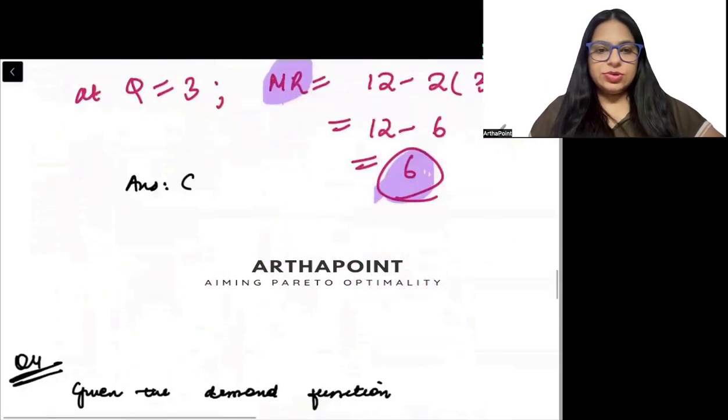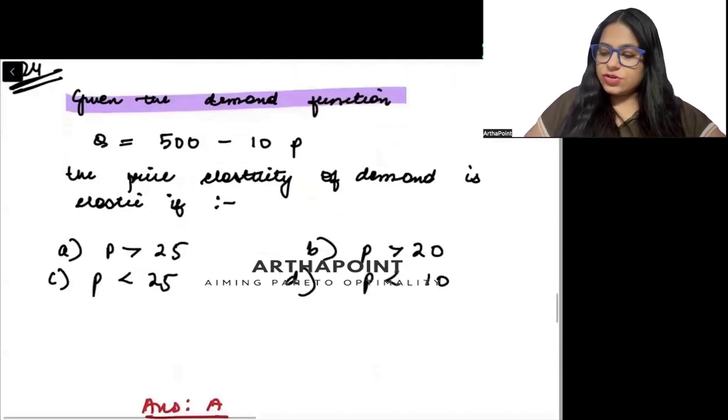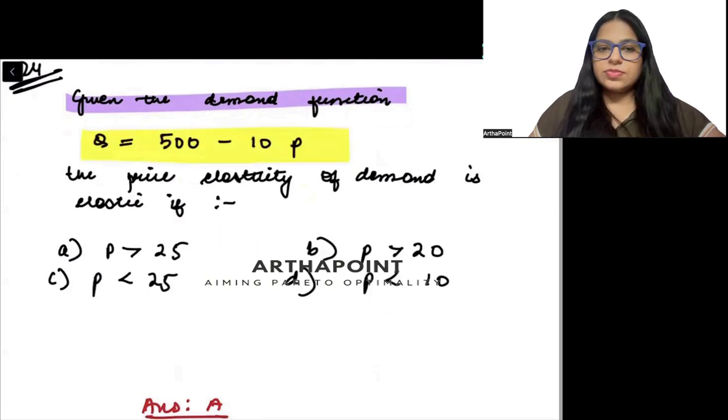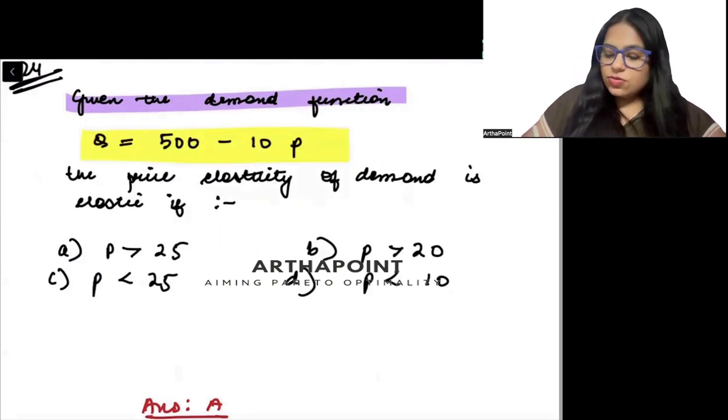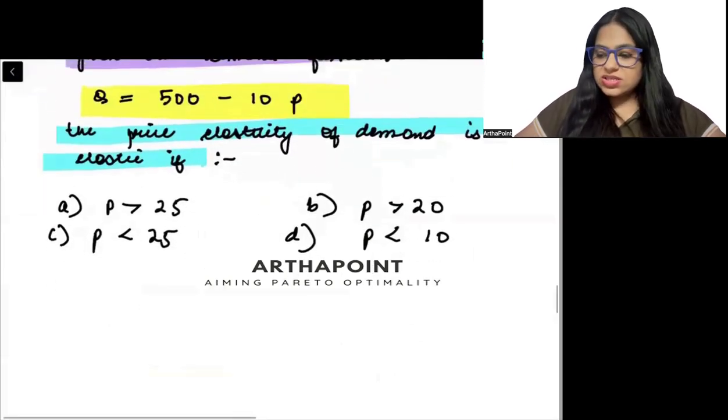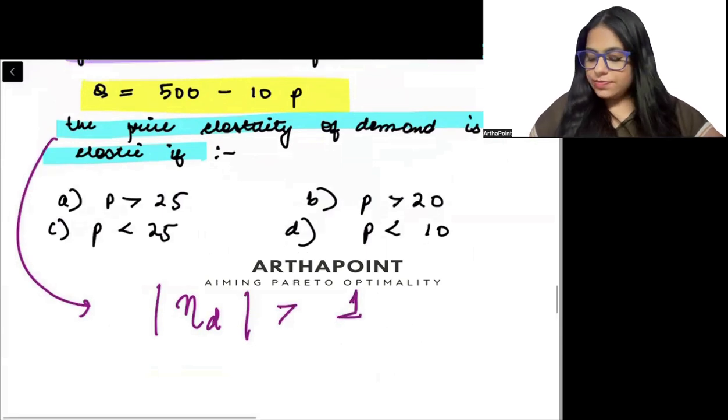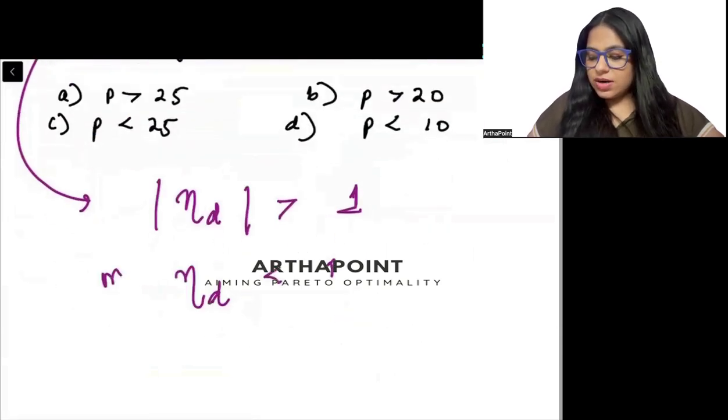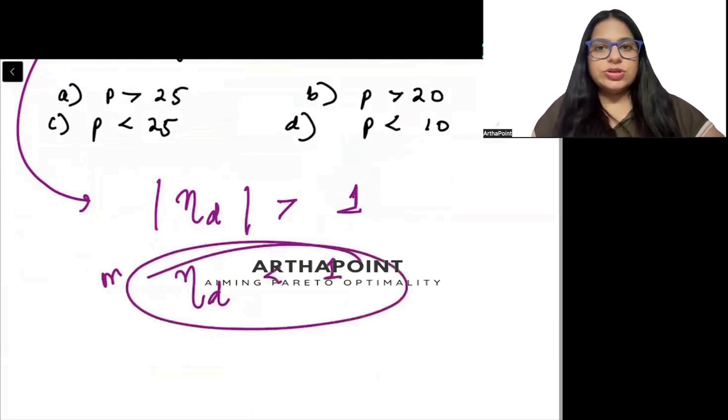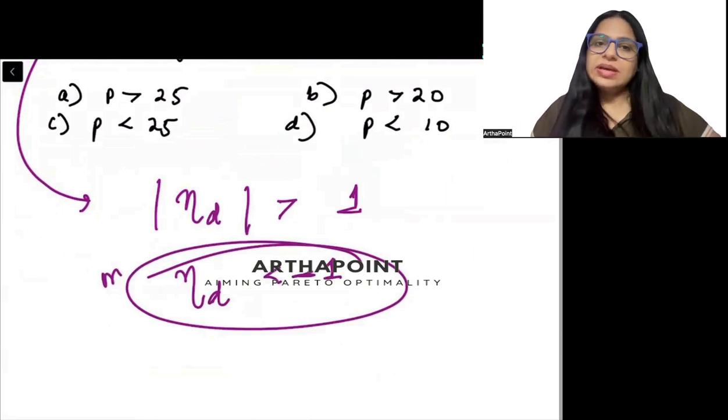Come to the next question. It says, you are given that this is the demand function. Look at the demand function. It says, find out when will elasticity of demand be elastic. When will it be elastic? So elasticity of demand, when is it elastic beta? When elasticity of demand in absolute terms is greater than 1. Or in general terms, when elasticity of demand is less than minus 1. So this is the elastic demand. Less than minus 1, so it will be elastic.